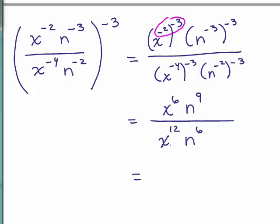Now we've got more factors of x in the denominator. So I'm going to keep the x in the denominator and do 12 minus 6. We have more n's in the numerator. So I'm going to keep the n in the numerator and do 9 minus 6. There you go. That's one way of doing it.